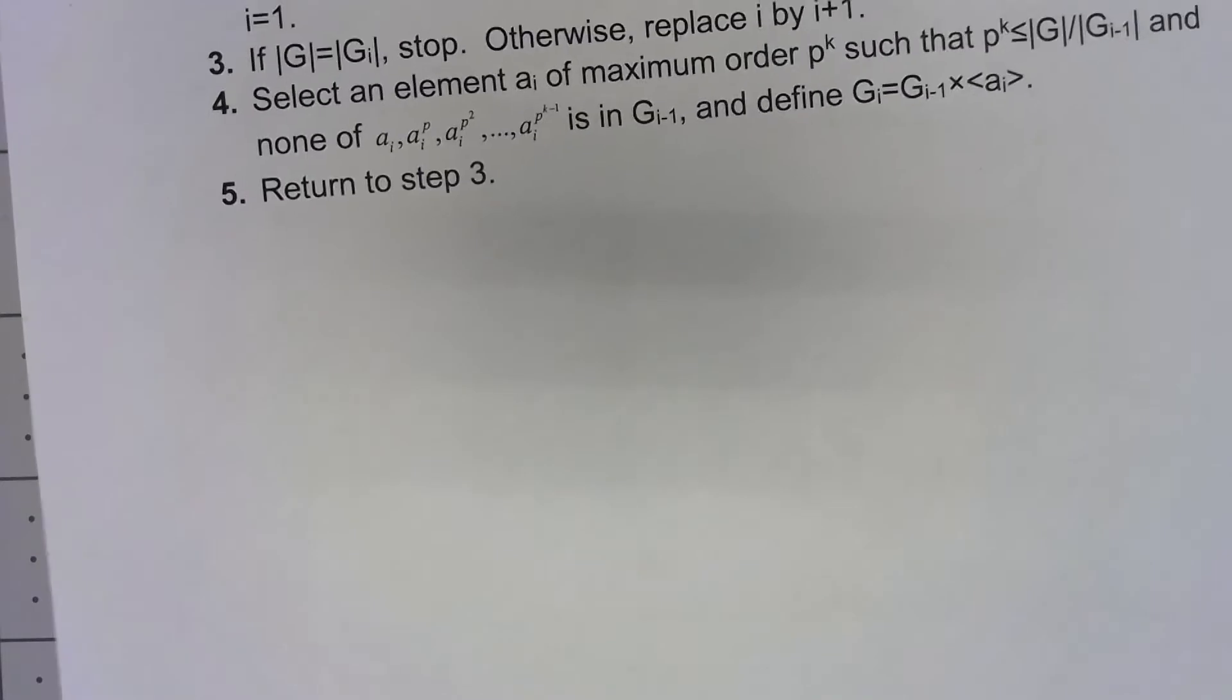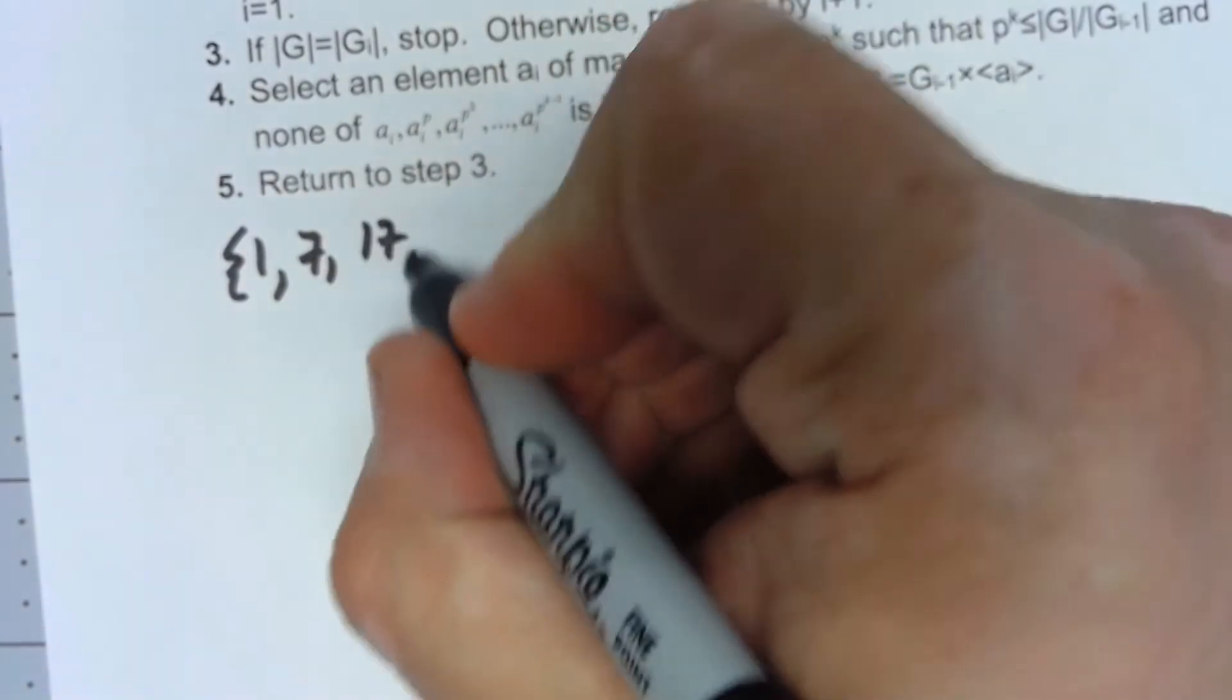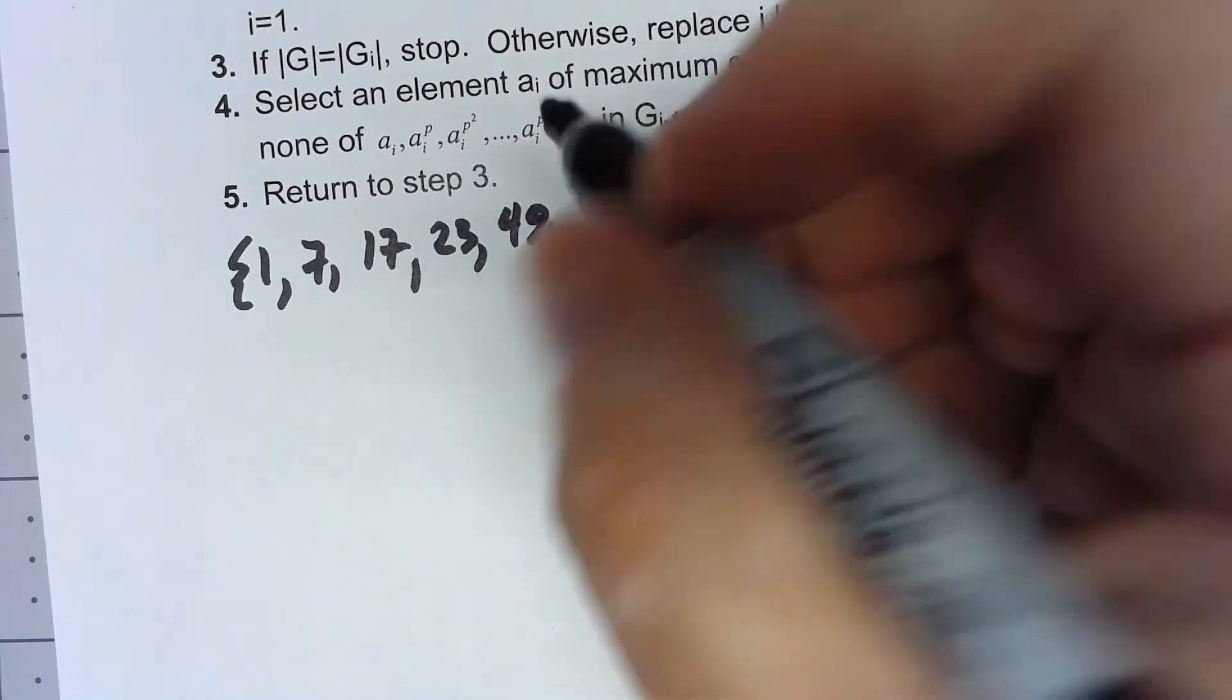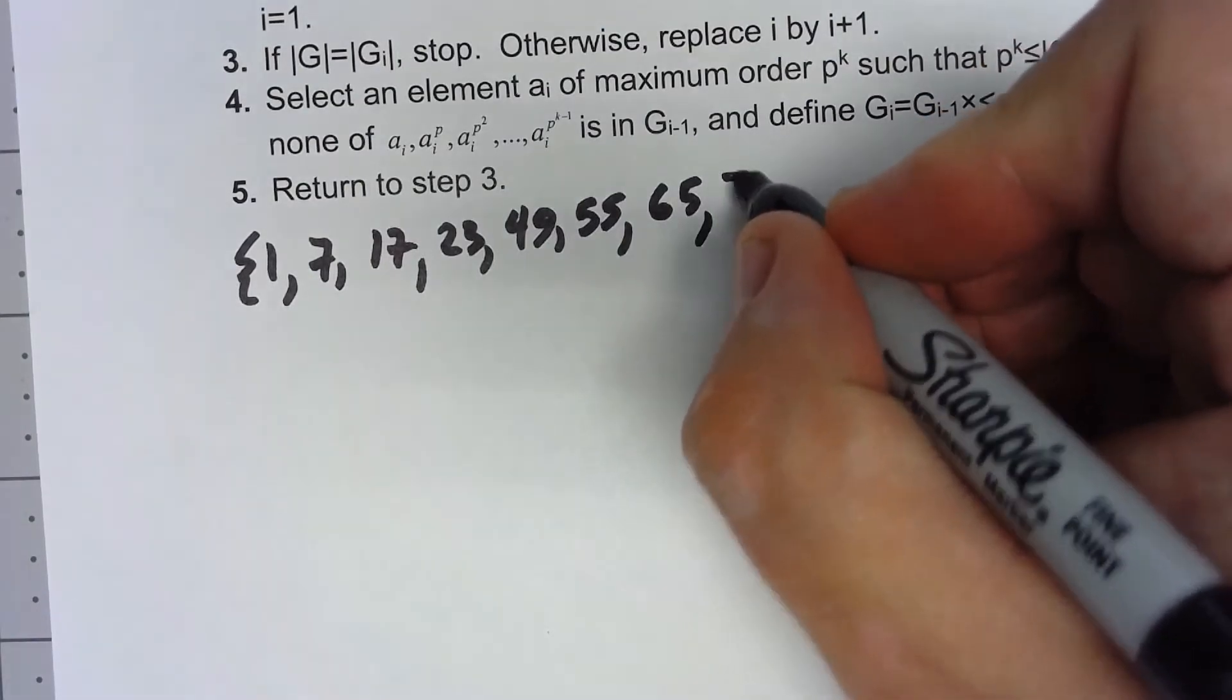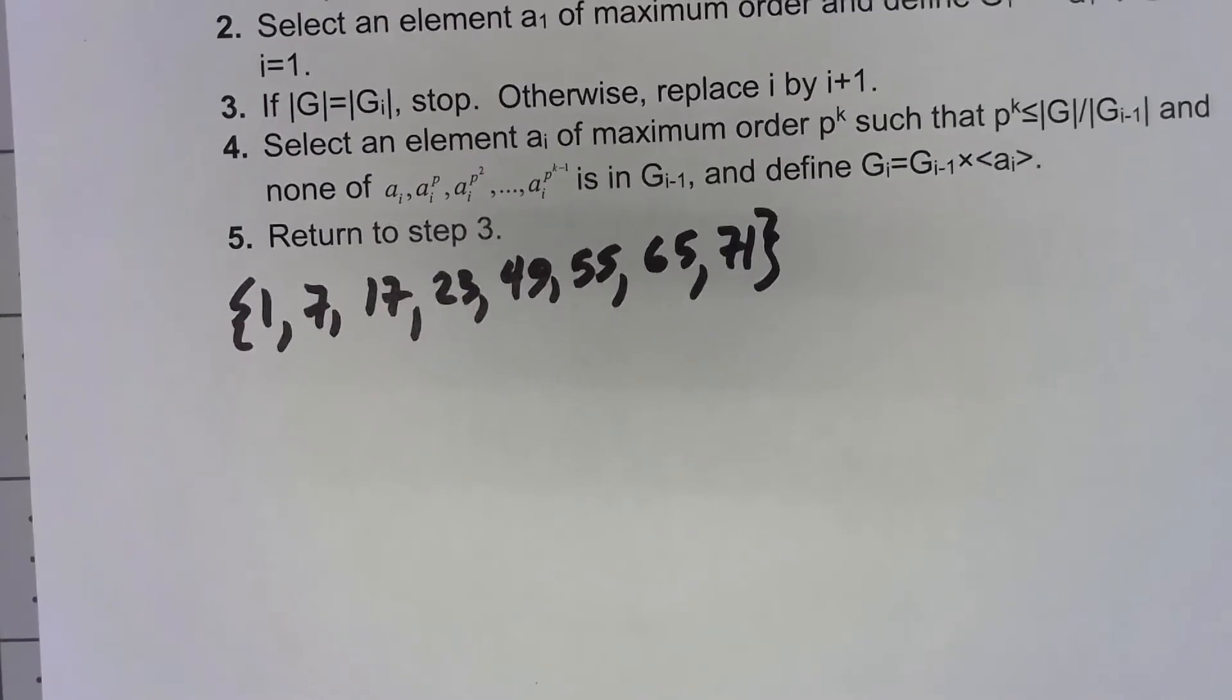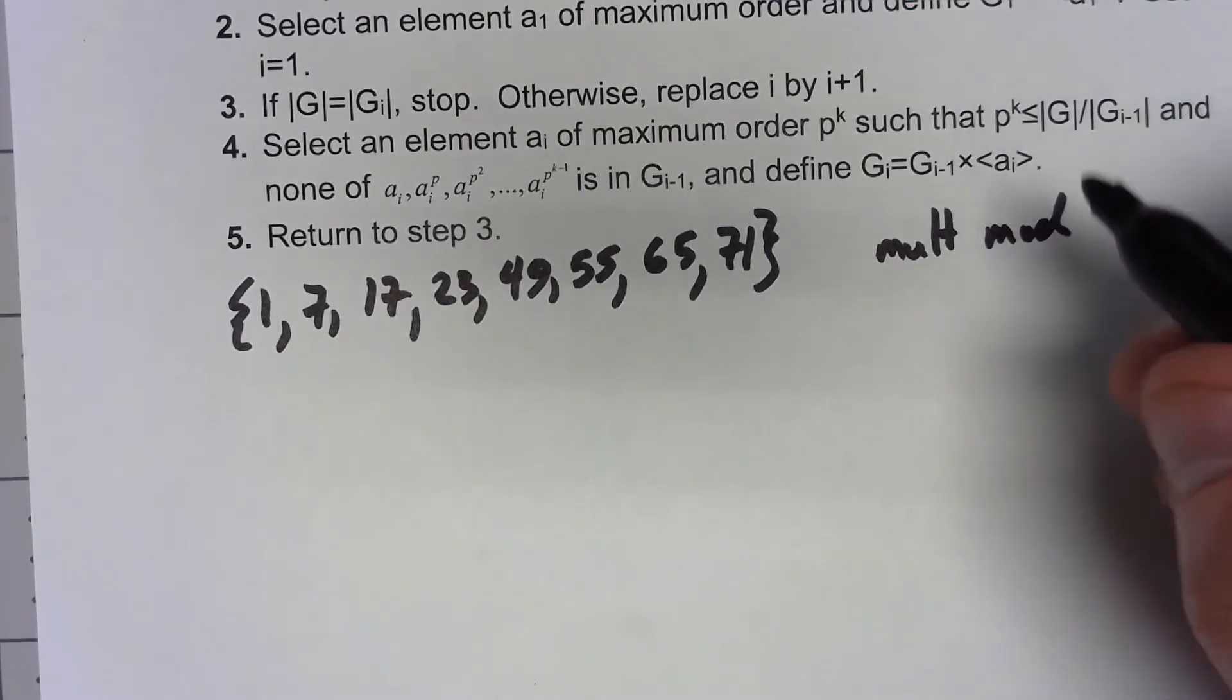So let's take the group which consists of the elements 1, 7, 17, 23, 49, 55, 65, and 71 where our group operation is multiplication mod 96.